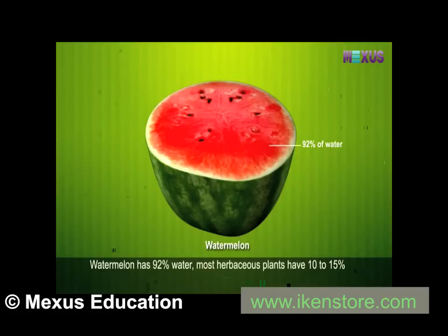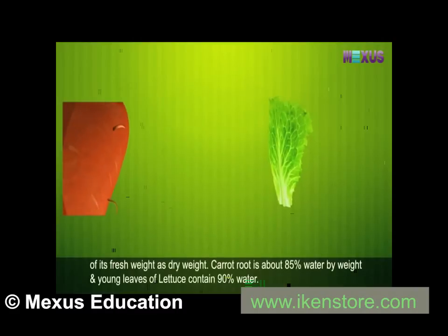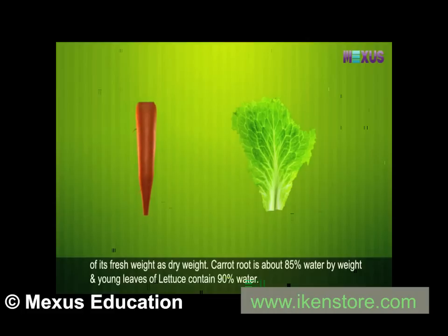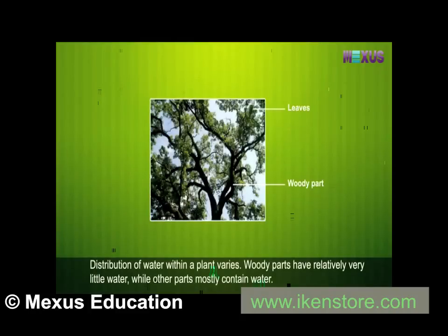Watermelon has 92% of water. Most herbaceous plants have 10-15% of their fresh weight as dry weight. Carrot root is about 85% water by weight, and young leaves of lettuce contain 90% of water. Distribution of water within a plant varies; woody parts have relatively very little water, while other parts mostly contain water.